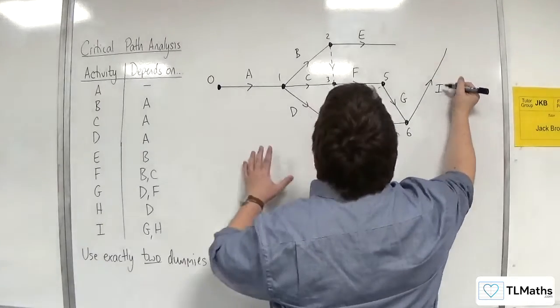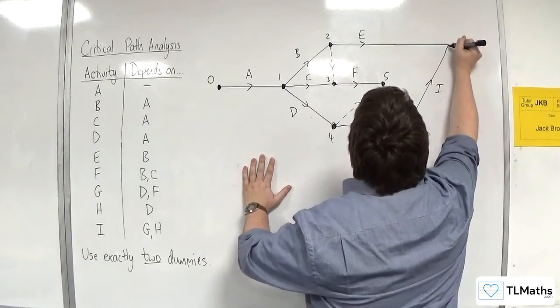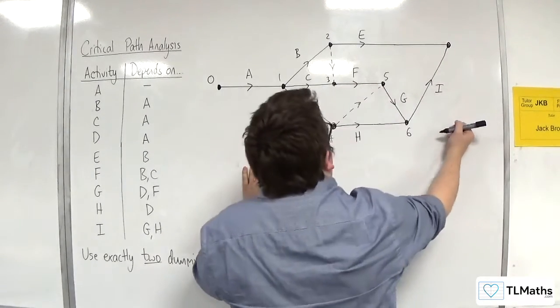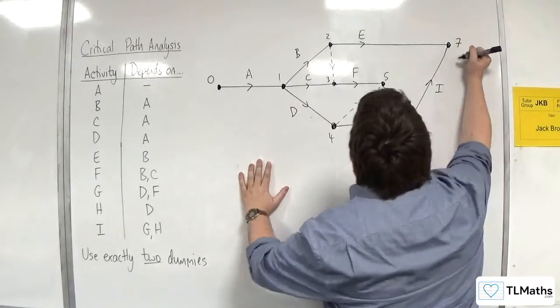And we need to connect up E and I for the final node, for the final event. And that could be labelled number 7.